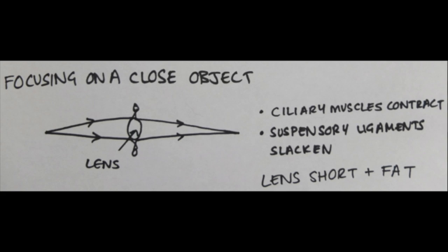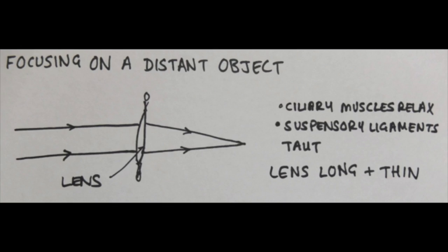When you're looking at an object really close to, your ciliary muscles contract, your suspensory ligaments become slack, and that enables your lens to become short and fat, so that the light rays which come into the eye are bent very strongly by the lens. When looking at an object really far away, the amount of bending needed is far less. In that situation your ciliary muscles relax, your suspensory ligaments become very tight and taut, and that pulls your lens really long and thin — and because it's thinner, the light rays will be bent less.